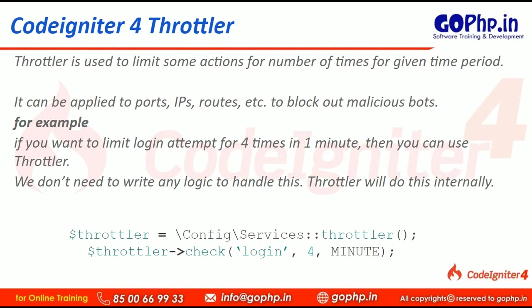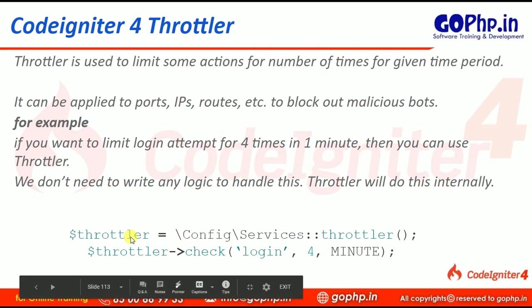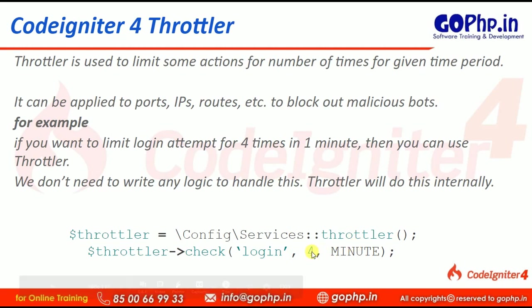To work with this Throttler class, we have to get the instance using services. After that, there is a method called the check method. 'Login' is the name of the bucket — you can take any name. The value 4 is the number of attempts, nothing but 4 tokens. In a minute, you can try to log into my application only 4 times, not more than that. If you complete 4 login attempts within a minute or 30 seconds, then I want to stop you. After 1 minute is completed, I will allow you again.